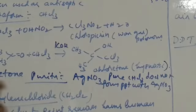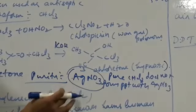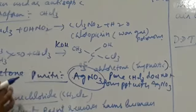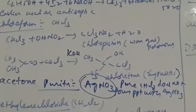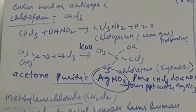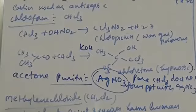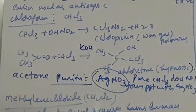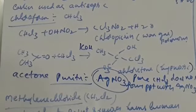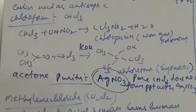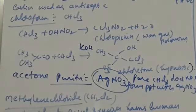The reagent used to check purity of chloroform is silver nitrate. Earlier, chloroform was also used as an anaesthetic agent, but nowadays it has been replaced by other anaesthetic agents. Inhaling chloroform in excess leads to headache, dizziness, and also damages the central nervous system.